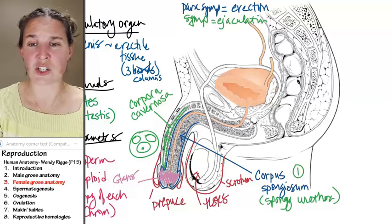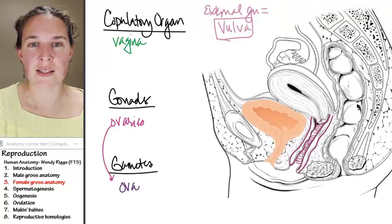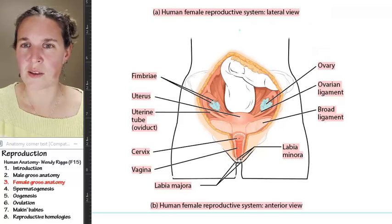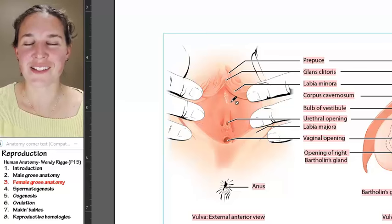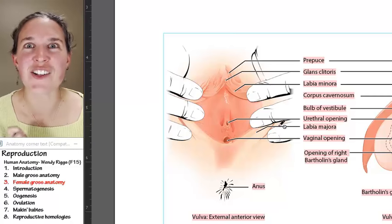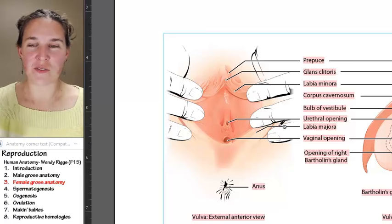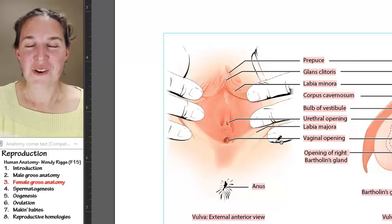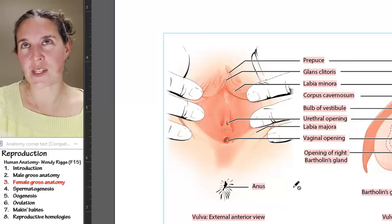All erectile tissue, very sensitive, and the clitoris also has a glans. The clitoris has a glans. The clitoris also has a prepuce or a foreskin, except we don't call it a foreskin on the clitoris, or maybe we do. I don't know. But the prepuce and the glans and its erectile and it functions in pleasure. Interesting.